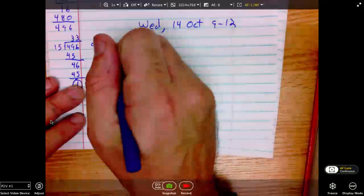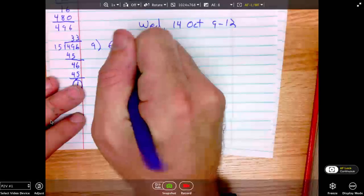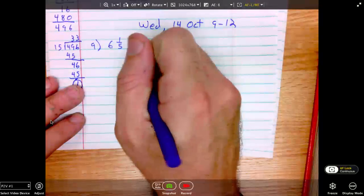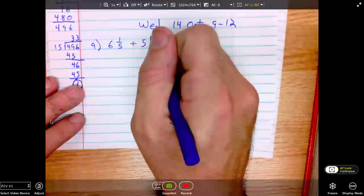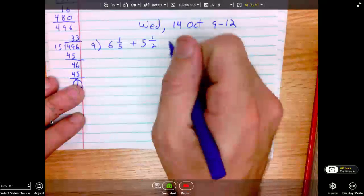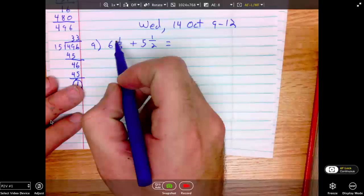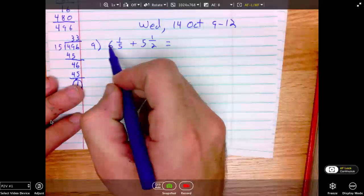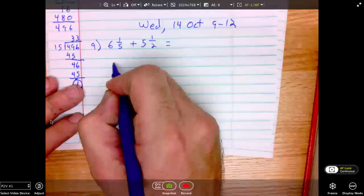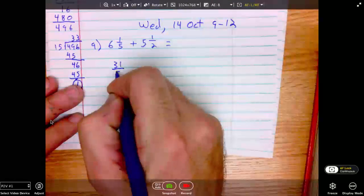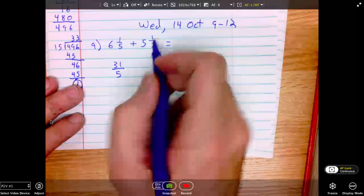Number 9 says 6 and one-fifth plus 5 and one-half. Again, first we will convert each one of these mixed numbers to an improper fraction. 6 times 5 is 30, plus 1 is 31. 5 times 2 is 10, plus 1 is 11.